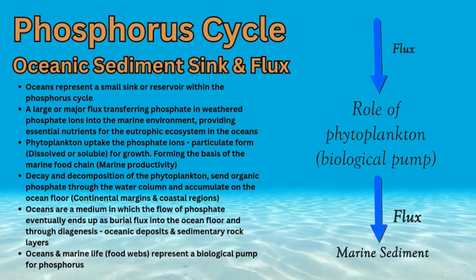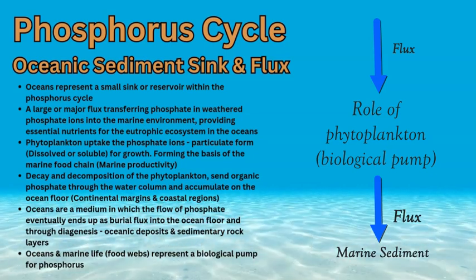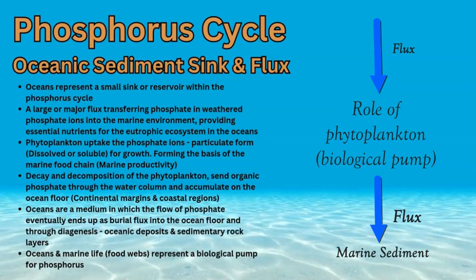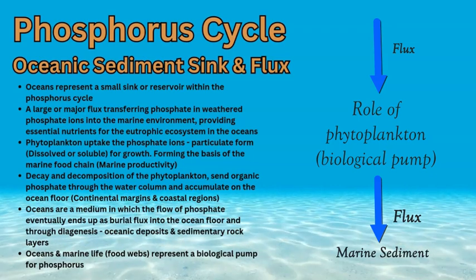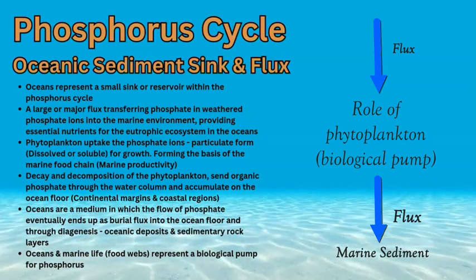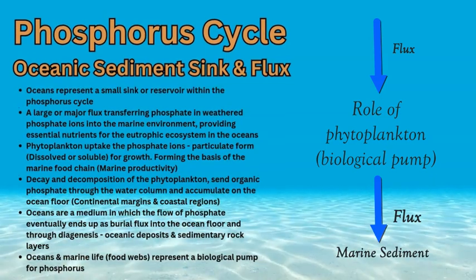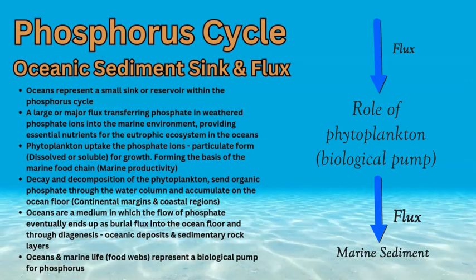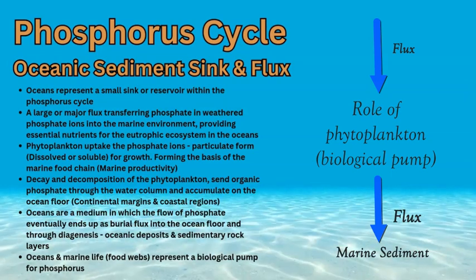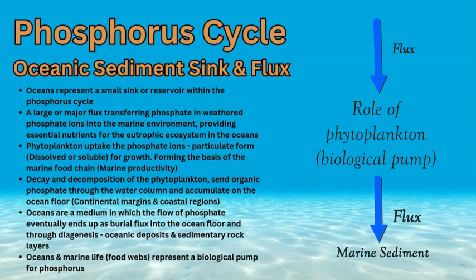In the ocean, phytoplankton — microscopic organisms at the base of the marine food web — exist in the eutrophic zone near the surface in the photic zone, where primary production through photosynthesis occurs. They consume inorganic phosphorus as phosphate ions, acting as a biological pump. The phytoplankton takes up phosphate ions, and when they decay and decompose, they fall out of the eutrophic zone to the benthic zone, accumulating on the ocean floor as large quantities of organic phosphorus. Phytoplankton waste also adds additional phosphate to the system, accumulating as oceanic sediment deposits.